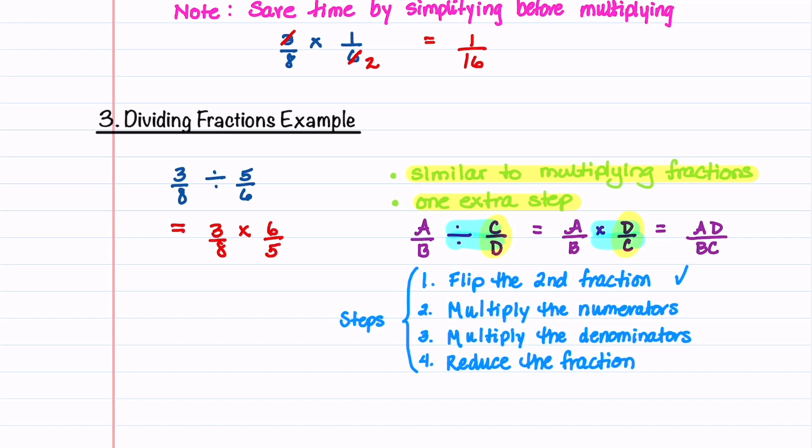We'll now multiply the numerators, multiply the denominators, and then reduce the fraction if we need to. 3 times 6 is 18, 8 times 5 is 40, and we notice that 18 and 40 are both divisible by 2.